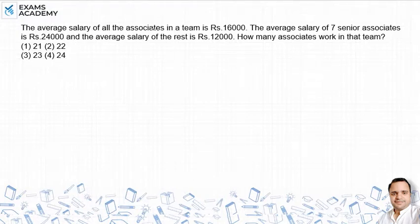The average salary of all the associates in the team is 16,000. The average salary of seven senior associates is 24,000, and the average salary of the rest is 12,000. How many associates work in that team?